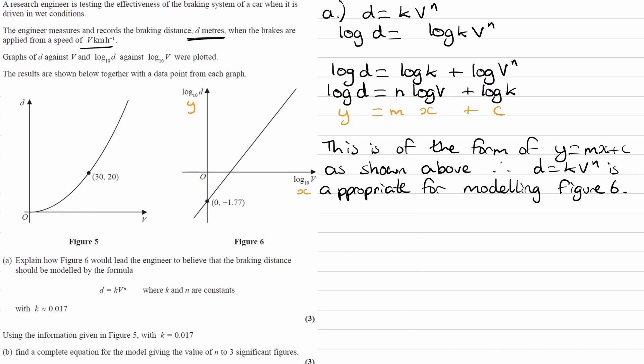So then onto the second part of this, same question part a. We're trying to show that k is roughly equal to 0.017. We have to use the stuff from this graph; we're given that coordinate here.